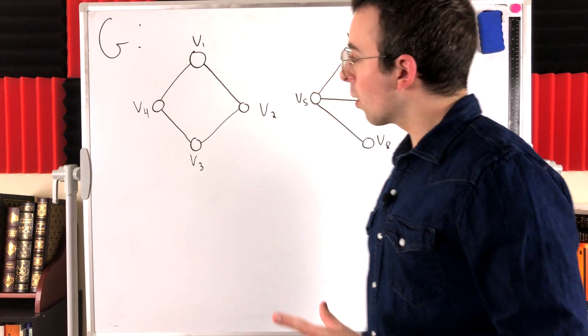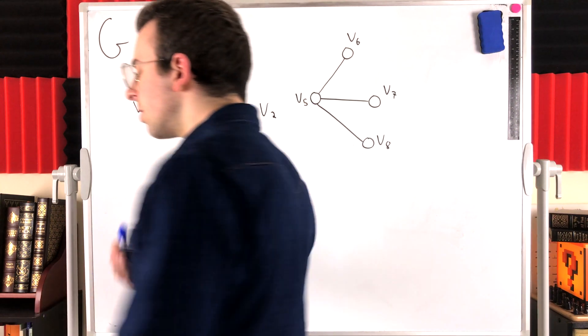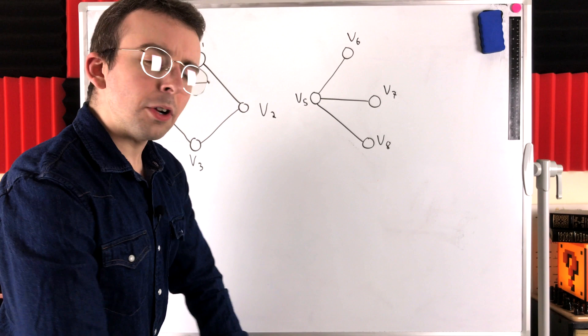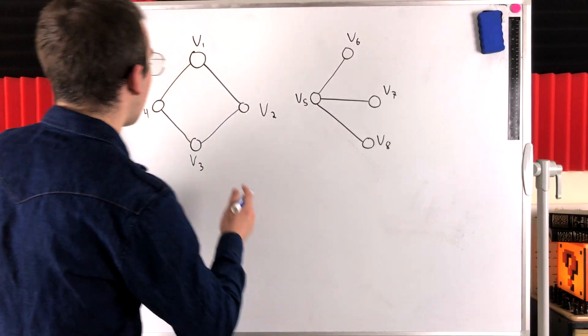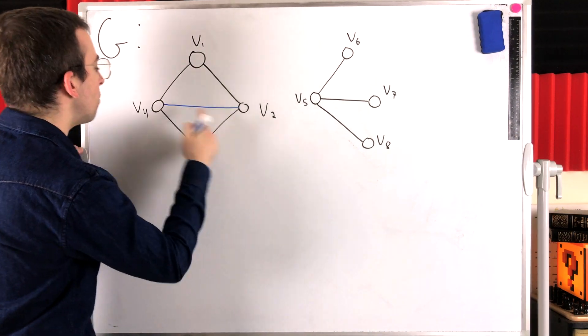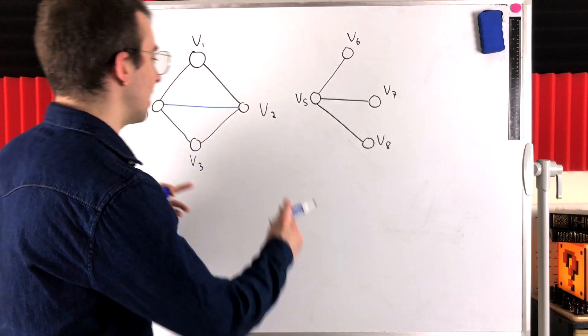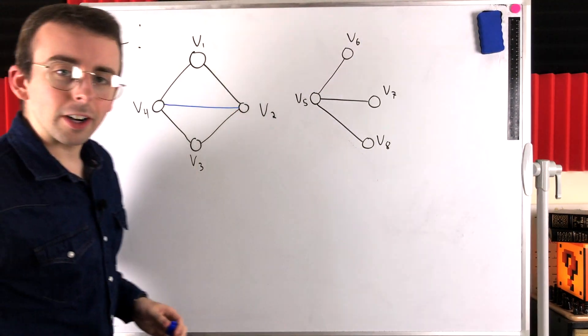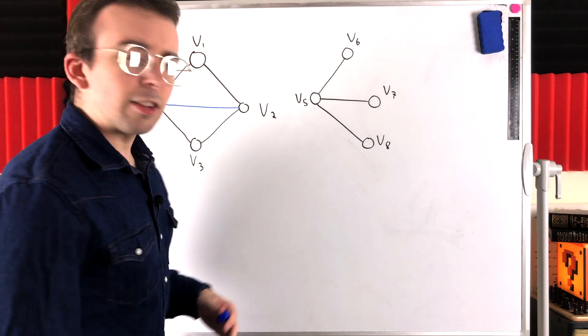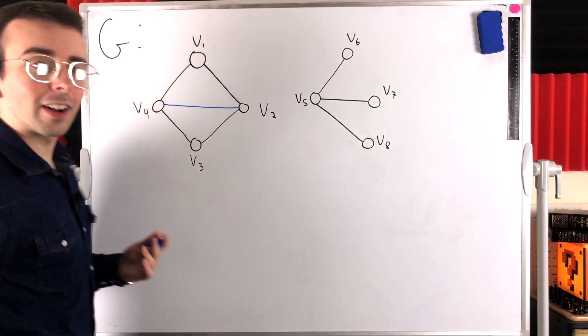Then the last detail I want to go over something that confused several people on the last video was something to the effect of how could this be a component of G? How could it be a maximal connected subgraph of G? When for example, we could expand it by adding an edge between V4 and V2, and then it would still be connected. So how does that work? Well, the problem is, if we add this edge from V2 to V4, it's no longer a subgraph of G, because this edge doesn't belong to the graph G.